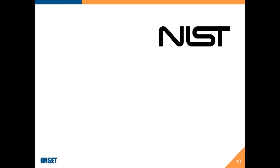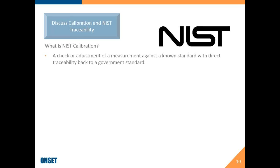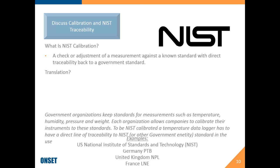Now we're going to talk about calibration and NIST traceability. I'll apologize if we have anybody outside the United States — NIST is the U.S. regulatory body. There are different regulatory bodies in different countries; they all do about the same thing. NIST calibration is the ability to check and/or adjust a measurement against a known standard with direct traceability back to a government standard. Government organizations — NIST in the United States, PTB in Germany, and NPL in the United Kingdom — maintain standards that tell you what measurements actually are, whether it's pressure, weights, or temperature.